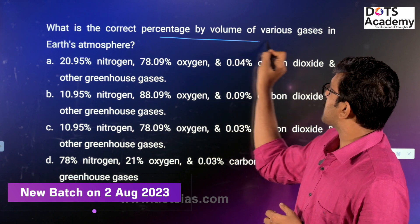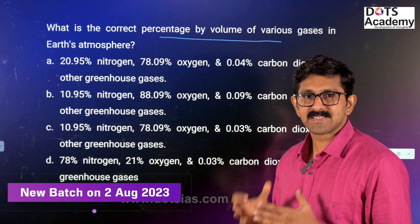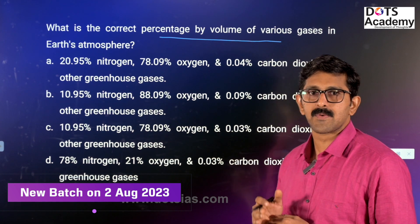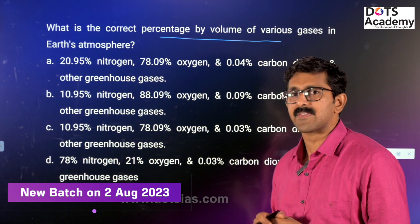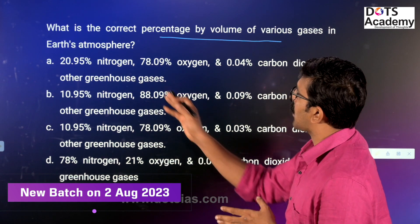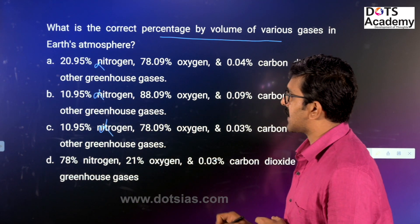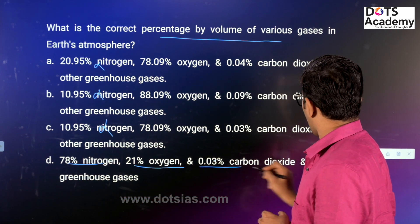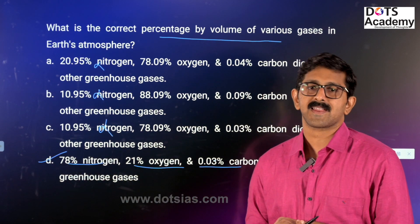Question 3: What is the correct percentage by volume of various gases in the Earth's atmosphere? Nitrogen is 78%, oxygen is 21%, argon is 0.93%, and carbon dioxide is 0.03%. Option D is the correct answer — 78% nitrogen, 21% oxygen, 0.03% carbon dioxide.